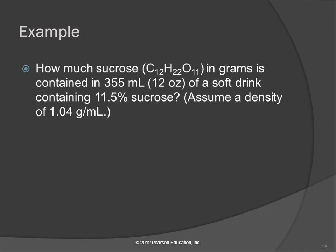Let's do an example. How much sucrose in grams is contained in 355 milliliters, which is 12 ounces, like a soda can, of a soft drink that contains 11.5% sucrose, and assume a density of 1.04 grams per milliliter.